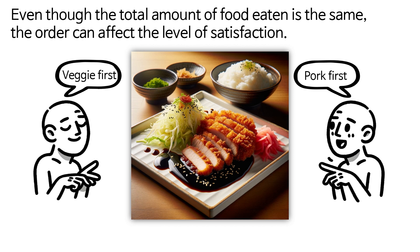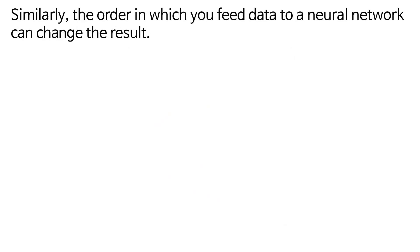Even though the total amount of food eaten is the same, the order can affect the level of satisfaction. Similarly, the order in which you feed data to a neural network can change the result.